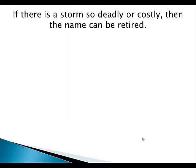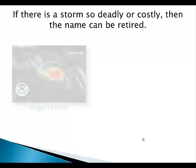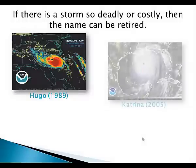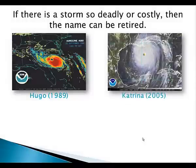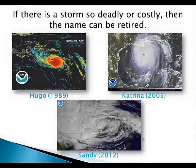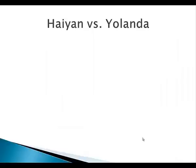However, sometimes there's a storm that's so deadly or costly that the name gets retired. Examples of this are Hurricane Hugo in 1989, Hurricane Katrina in 2005, and Hurricane Sandy in 2012.